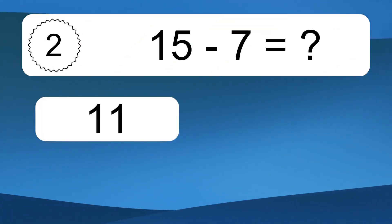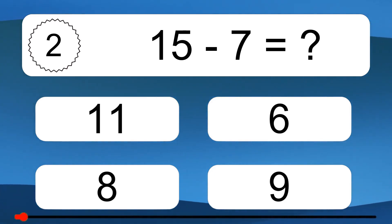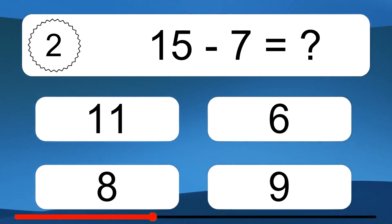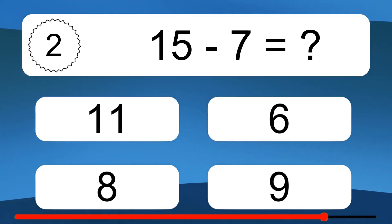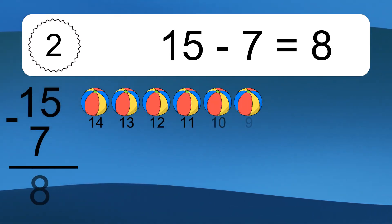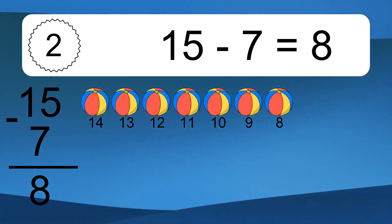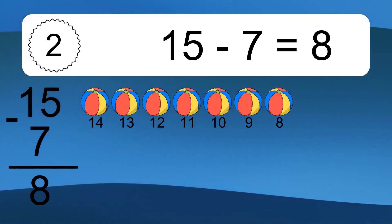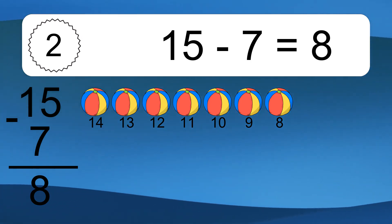15 minus 7 equals what? 15 minus 7 equals 8. Let's count it: 14, 13, 12, 11, 10, 9, 8.